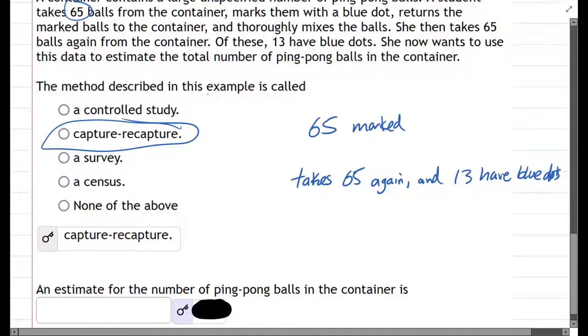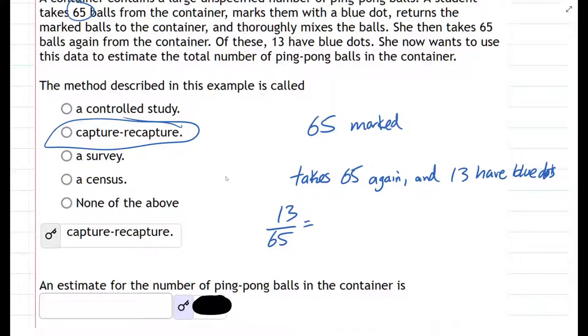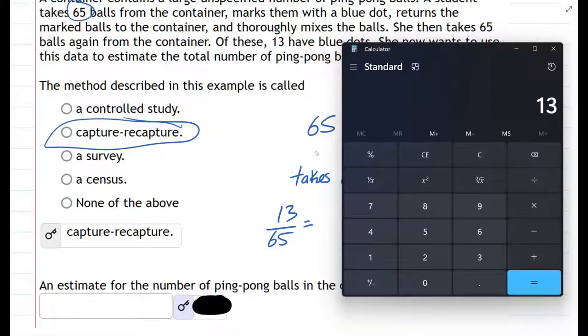And so what we have to do is get the complementary percentage here. So we have 13 have blue dots, and we took 65 total. So we got 20%.